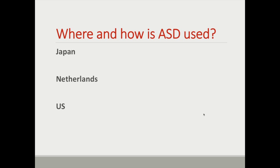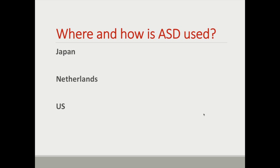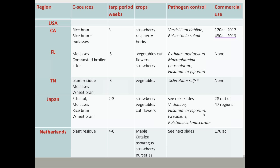ASD is being done in slightly different forms in different parts of the world, primarily in Japan, the Netherlands, and here in the US. This table shows how it's being done in different parts of the world. In the US, work is going on in California, Florida, and Tennessee, as well as in Japan and the Netherlands. A number of different carbon sources are being used depending on the place and the cropping system, and a number of different pathogens have been shown to be controlled by this technique.